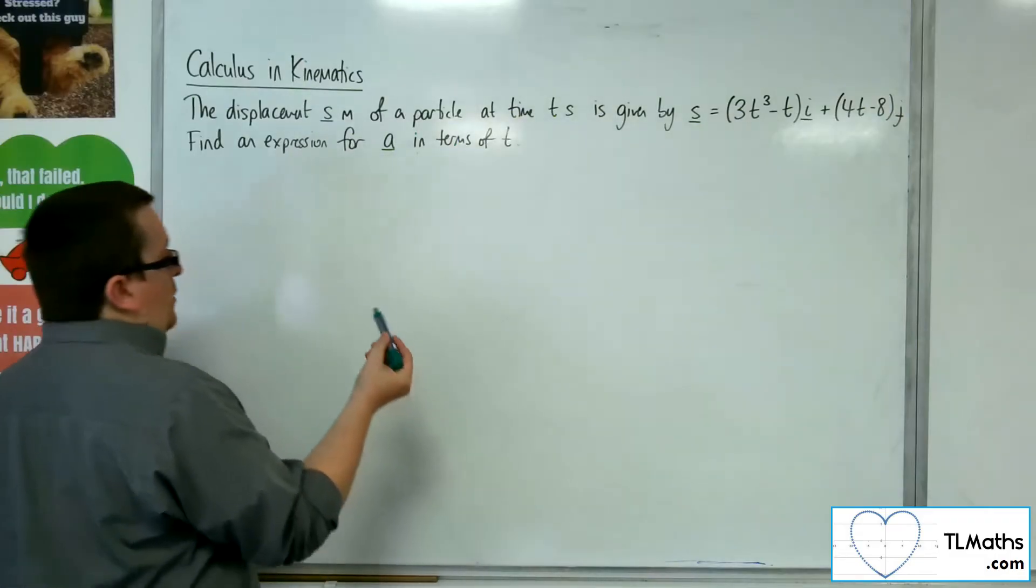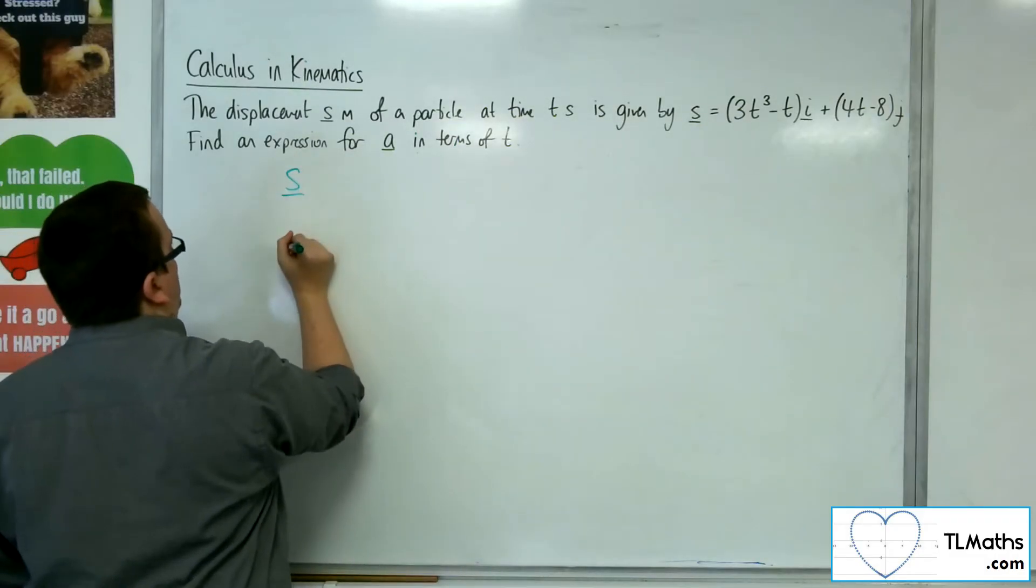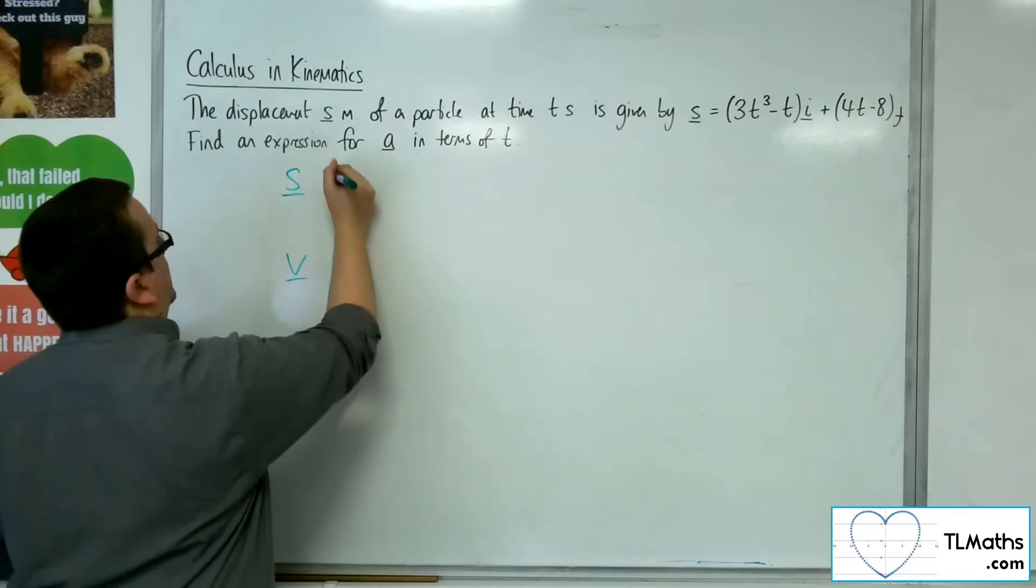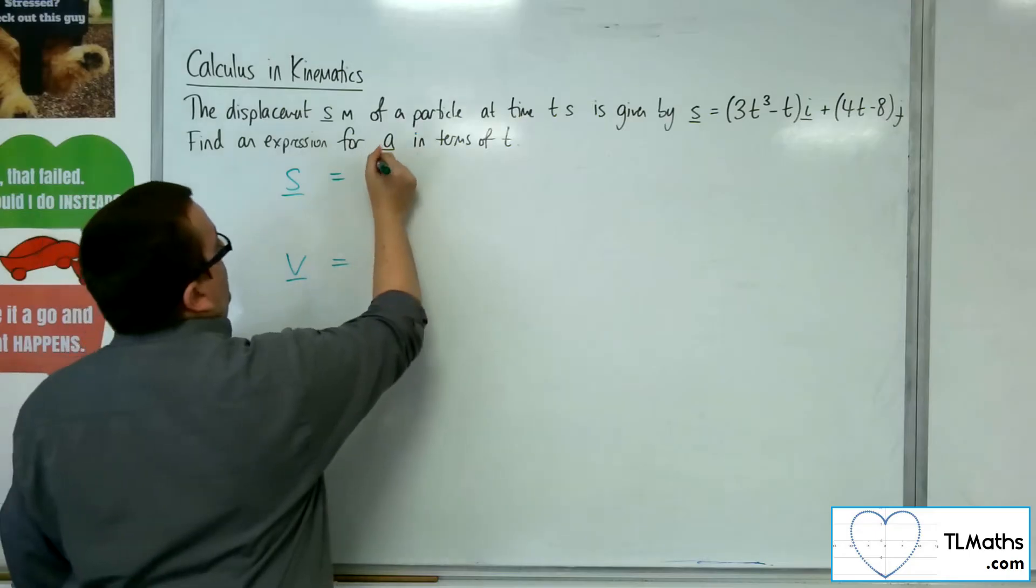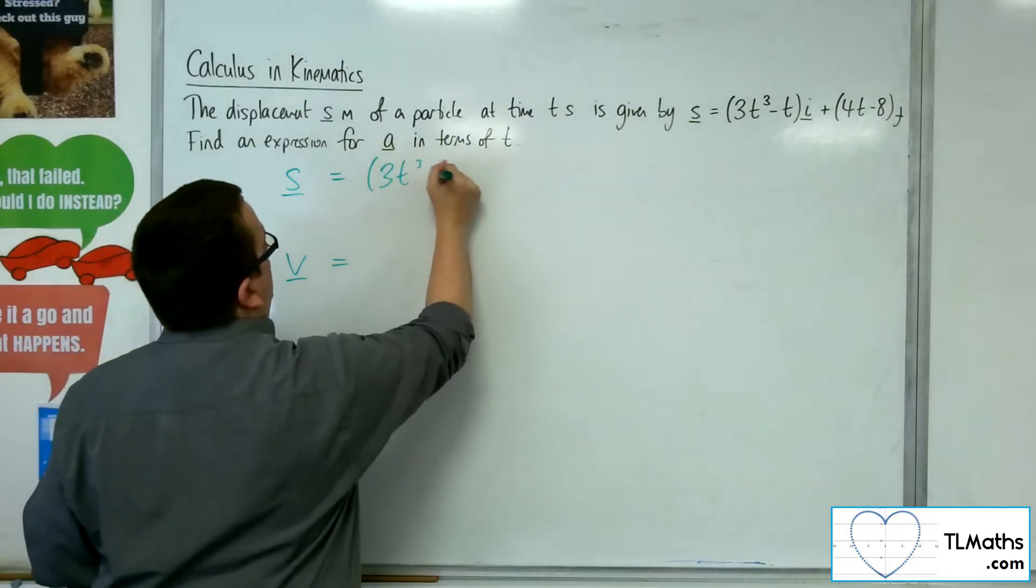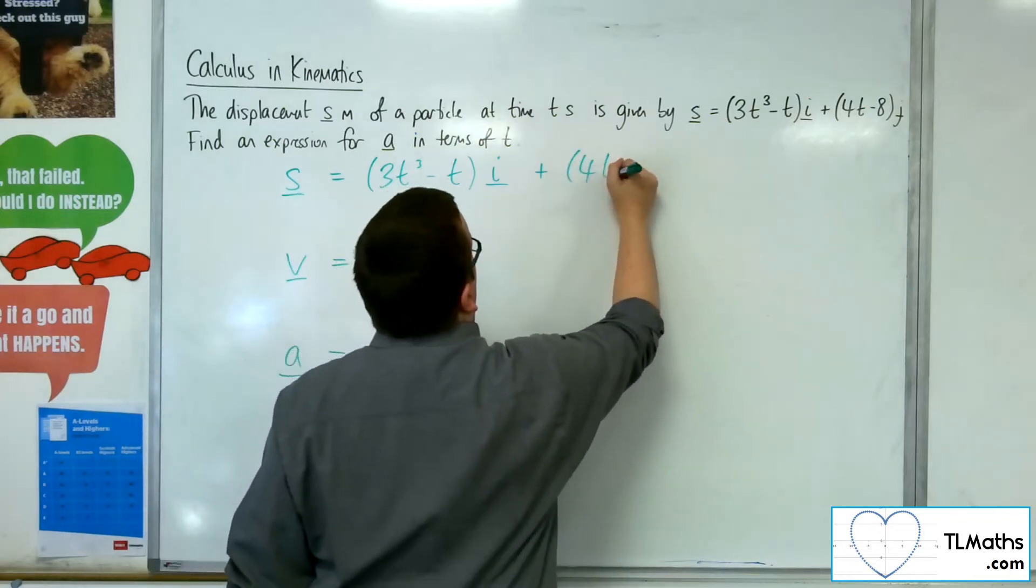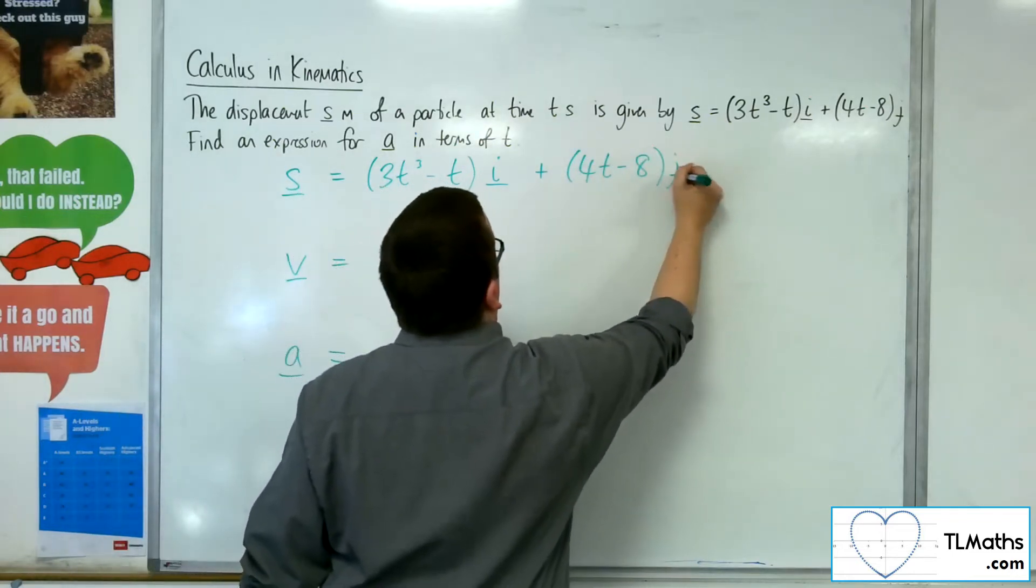So we're going to write out s, v, and a. So s is 3t cubed take away ti plus 4t minus 8j.